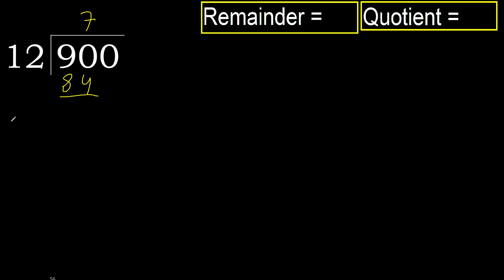Ok. Subtract 90 minus 84 equals 6. Next.